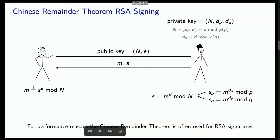In practice, this textbook version of RSA is not used because it's seen as too slow. Most implementations use a version that relies on the Chinese Remainder Theorem to speed things up. Bob generates a signature in two parts — one modulo P and one modulo Q — and then combines those into a single signature that can be verified as before.